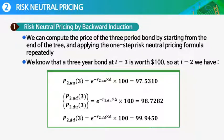Risk-neutral pricing by backward induction, that is what we did. We can compute the price of the three-period bond by starting from the end of the tree and applying the one-step risk-neutral pricing formula repeatedly.